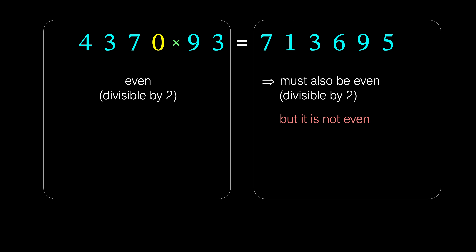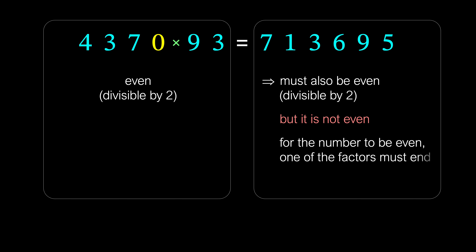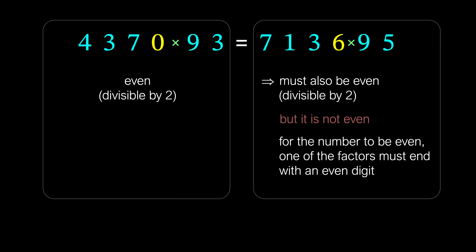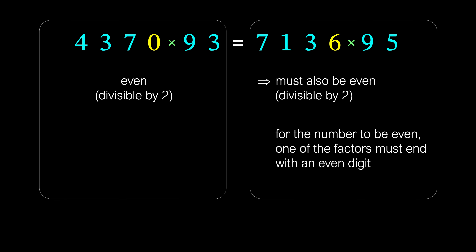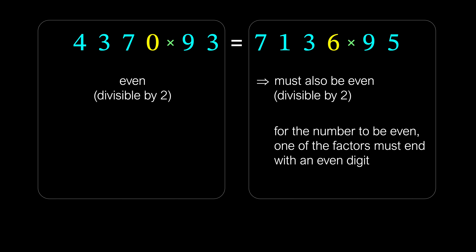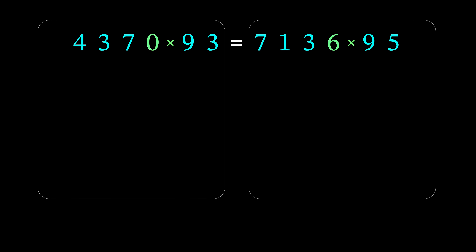However, the original number on the right is not even. For the number to be divisible by 2, one of the factors on the right must end with an even digit. But in the number on the right, the only even digit is 6. This means that one of the factors on the right must end with 6. Thus, we must place the multiplication sign after 6 to ensure that the number on the right is also even, like the number on the left. So, we have restored the second multiplication sign and proved that the multiplication sign must indeed be placed here.